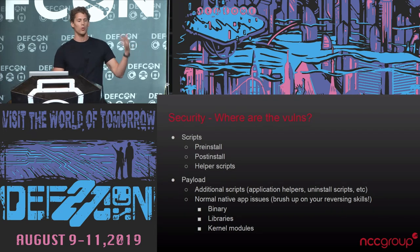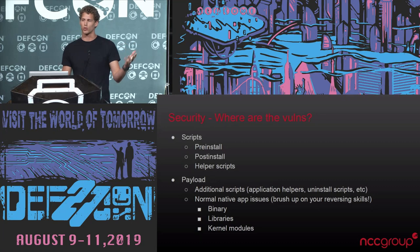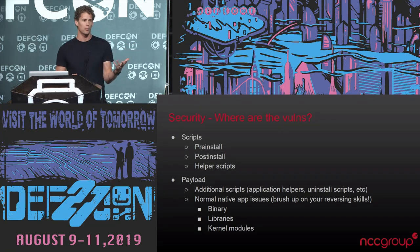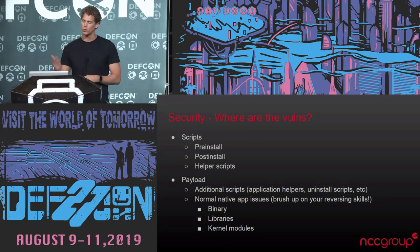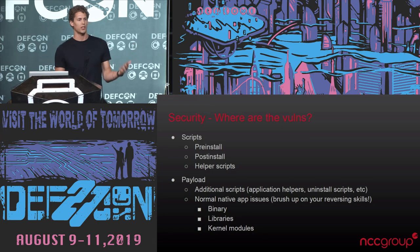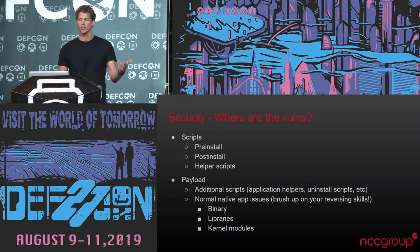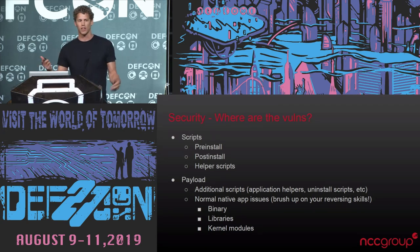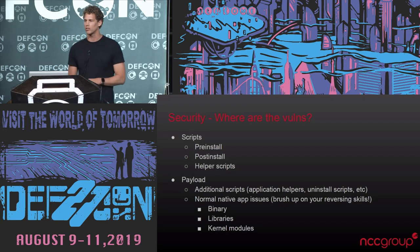Within the payload, you can also have more scripts. I've seen uninstallation scripts that are easy to audit, some helper scripts for debugging or logging or error reporting that get installed. And then you also have your normal native apps that get installed — the actual application binary, the kernel modules, the libraries. If you want to go into it, you can look for native application flaws through reverse engineering — fire up Hopper.